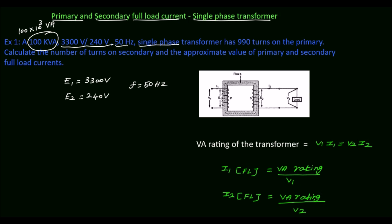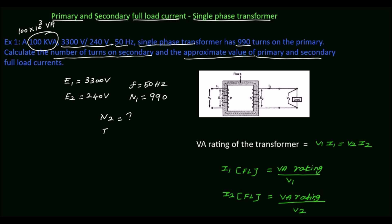The single phase transformer has 990 turns on the primary, so the number of turns on the primary N1 is equal to 990. We have to calculate the number of turns on the secondary N2, and also calculate the approximate value of primary full load current I1 and secondary full load current I2.